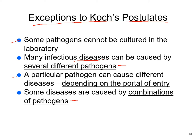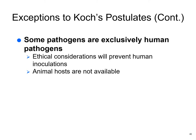Some diseases are caused by a combination of pathogens, and we cannot experiment with Koch's postulates on humans — it's illegal and ethically wrong to intentionally kill people. Some pathogens are exclusively human pathogens and we simply cannot experiment on humans with agents that would kill them.